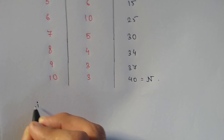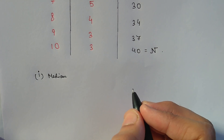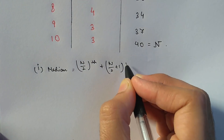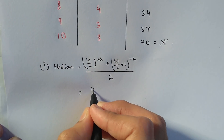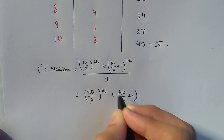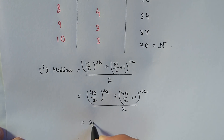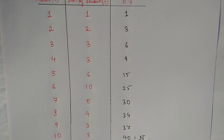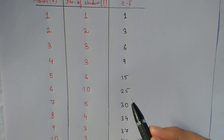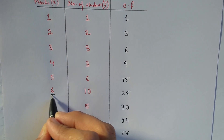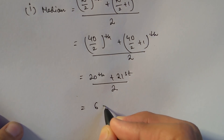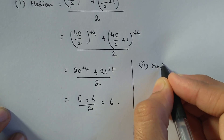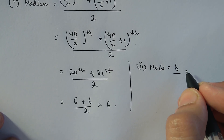Since n equals 40, an even number, we use the formula: median equals (n/2 th term plus n/2 plus 1 th term) divided by 2. That gives us the 20th term plus the 21st term divided by 2. From the cumulative frequency table, both the 20th and 21st terms fall in the group with cumulative frequency between 15 and 25, corresponding to marks 6. So median equals 6. The mode is also 6 because it has the highest frequency of 10.